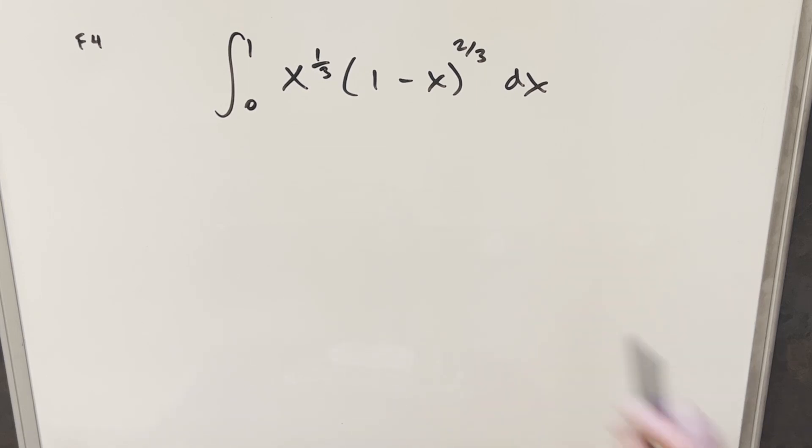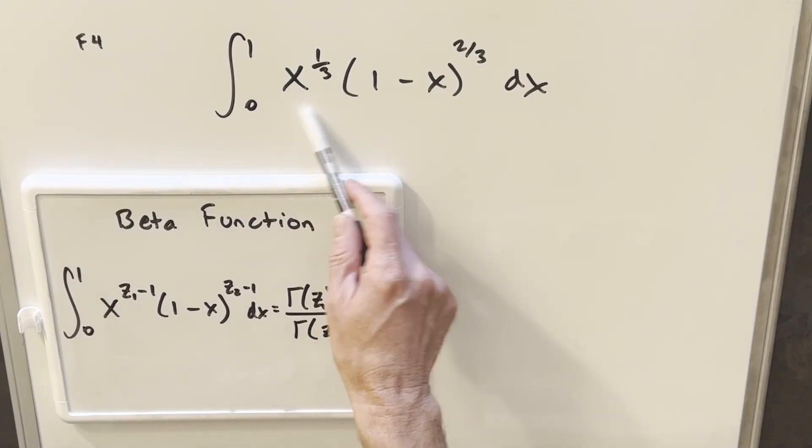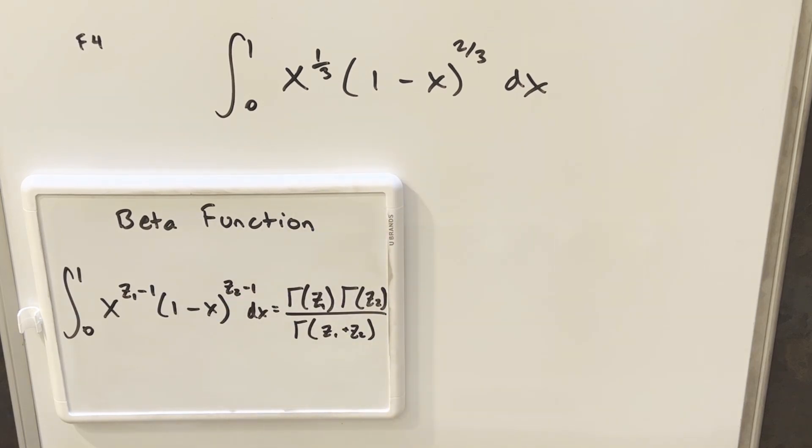Okay, and this is actually pretty nice because we do have a formula for this. You may notice this isn't exactly the right form for the beta function, so let's just look at that formula really quick. Our formula for the beta function—notice we have the exact same bounds, we get the same setup here with x to the z1 - 1 times 1 minus x with some exponents—and what this is going to allow us to do is just go right to a solution in the form of the gamma function.